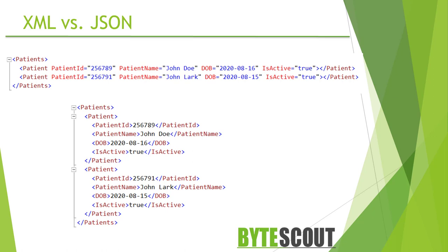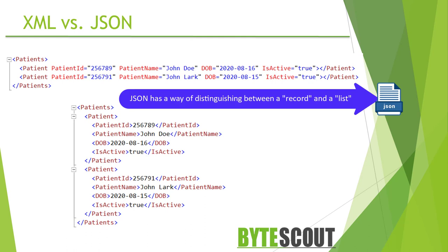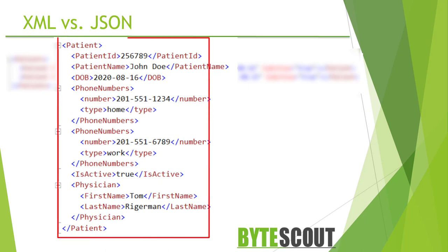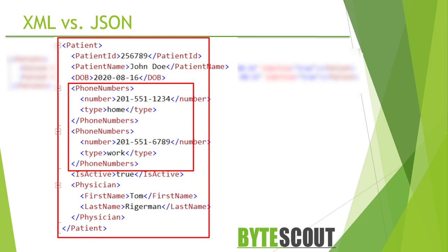JSON looks more like the data structures we declare in programming languages. Most importantly, it has a defined way of distinguishing between a record and a list. An object notation is practically useless without such a distinction, and XML has no such distinction. Looking at this XML example, patient is a record and phone number is a list, but they are not identified as such by the syntax. The advantage of JSON is that the low-level syntax has that distinction built in, making it very succinct and universal.